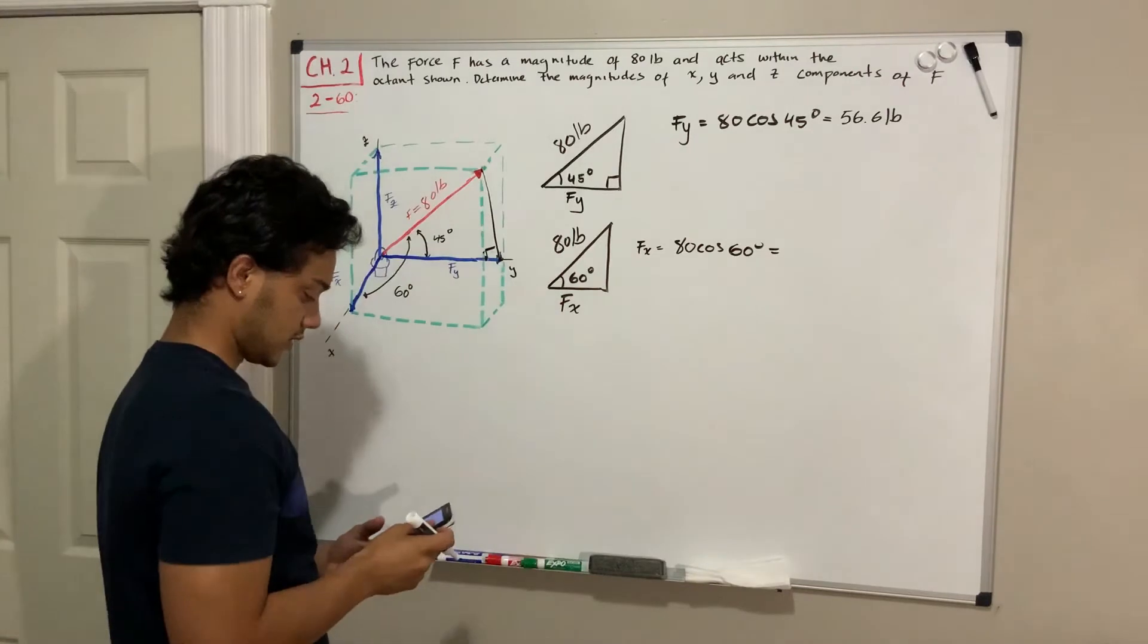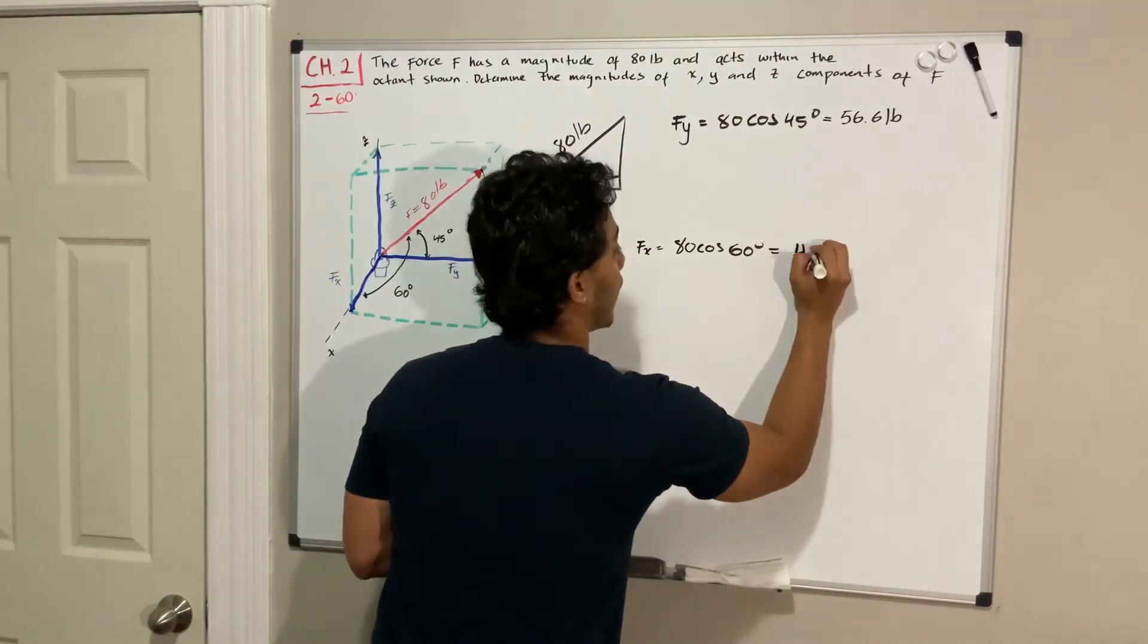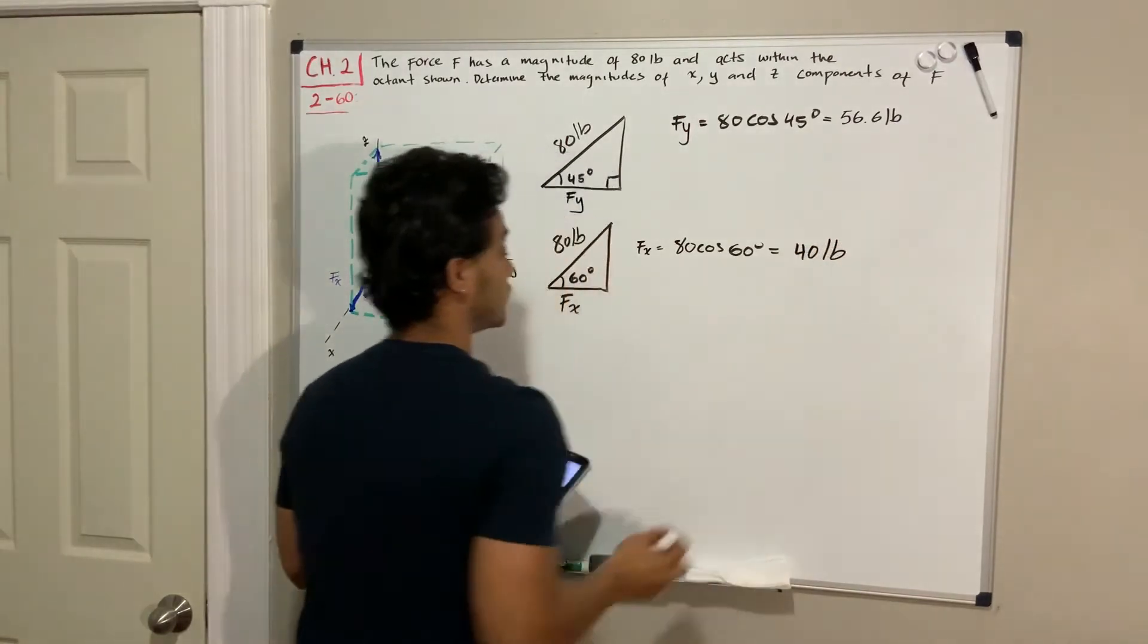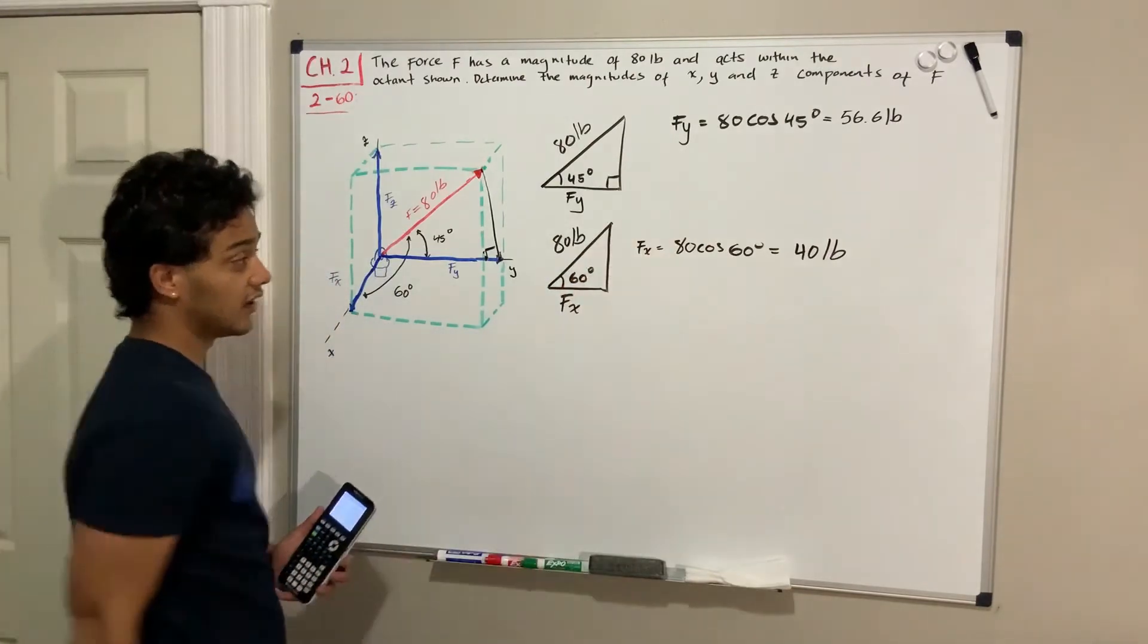And cosine of 60, I'm pretty sure it's 40 pounds. So 40 pounds.